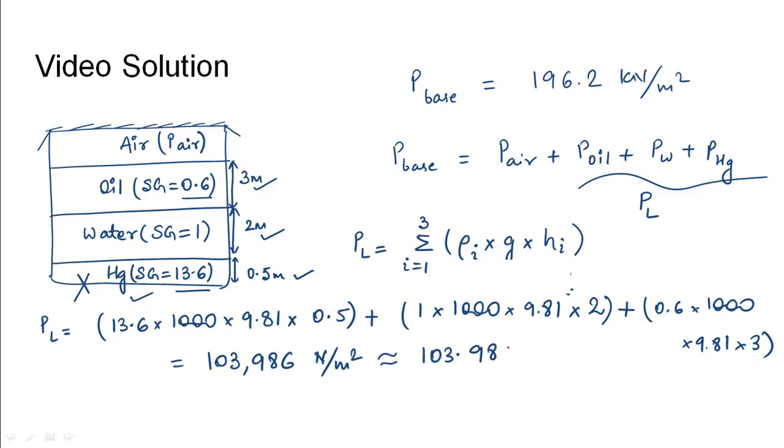So Pbase equals the pressure of the air in the tank plus the total liquid pressure. Using this, Pair can be written as Pbase minus Pliquid, which will be Pbase (given as 196.2) minus Pliquid (found as 103.986). This would turn out to